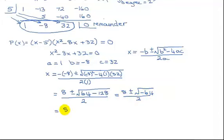So I get 8 plus or minus the square root of 64 minus 128 is negative 64. So now I have 8 plus or minus, pull out the negative, the square root of the negative 1 is i times the square root of 64.